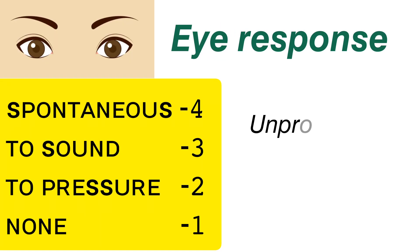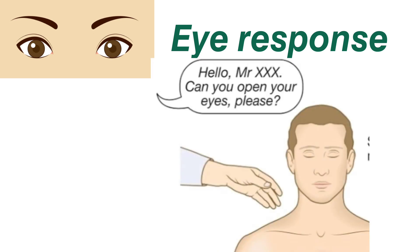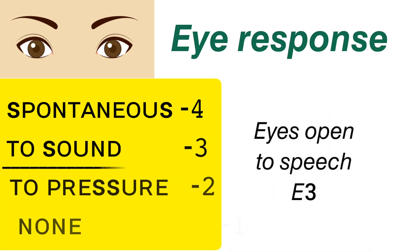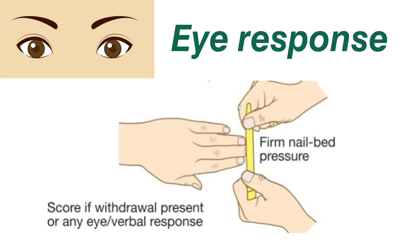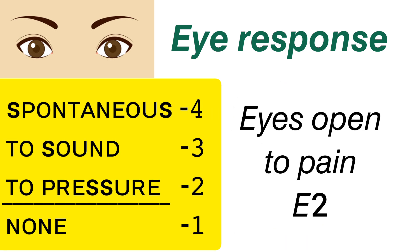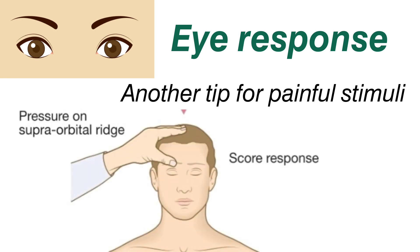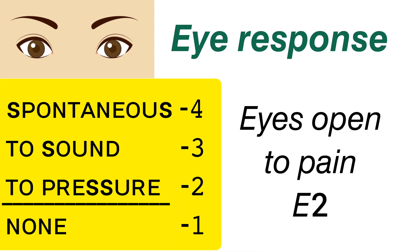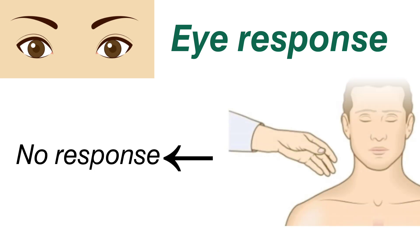First, Eye Opening. Spontaneous eye opening is 4 points — the patient naturally opens their eyes. To sound is 3 points — the patient opens eyes in response to sound. To pressure is 2 points — we apply strong pressure, such as nail bed pressure or Supra Orbital Pressure, where we press firmly above the eyebrow to create a painful stimulus. No response is 1 point.